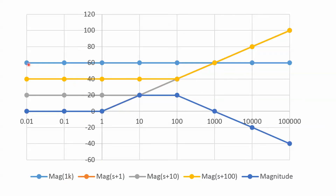The magnitude of 1K is 60 dB constant. The magnitude of (s+1) goes flat up to ω=1 and then continues up with a 20 dB per decade slope. The magnitude of (s+10) is gray — flat until ω=10, then goes up by 20 dB per decade. The magnitude of (s+100) starts at 40 dB and then goes up by 20 dB per decade. Then you add the magnitude of 1K, add the magnitude of (s+1), and subtract the yellow (s+100) and the gray (s+10), giving our final magnitude plot in blue.